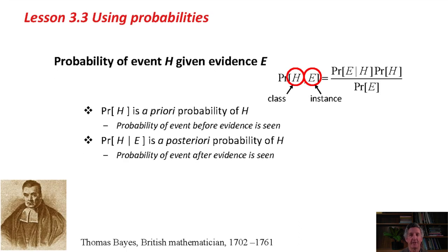There's a theorem in probability called Bayes Theorem, after this guy, Thomas Bayes, from the 18th century. It's about the probability of a hypothesis H given evidence. In our case, the hypothesis is the class of an instance, and the evidence is the attribute values of the instance.